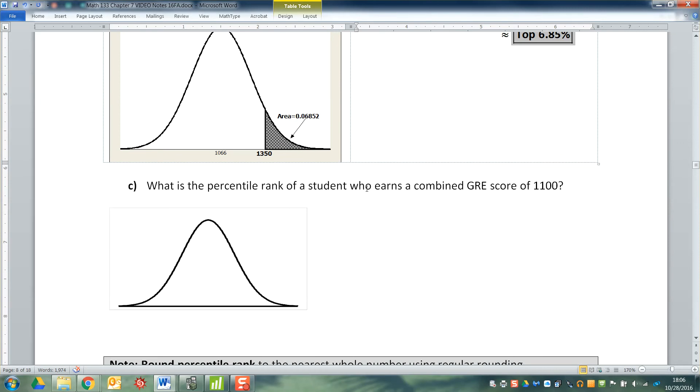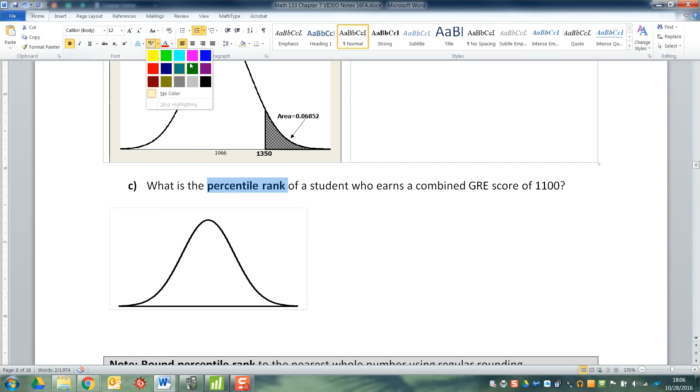All right. So suppose you're a person that takes the GRE and you score at 1100. What's your percentile rank? Now what does that mean? It's been a while since we've seen percentile like that.